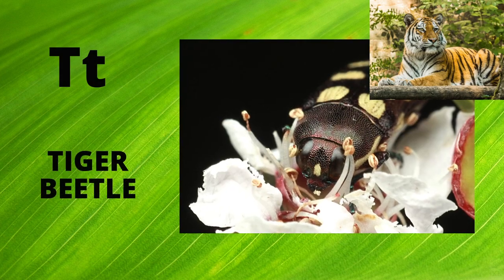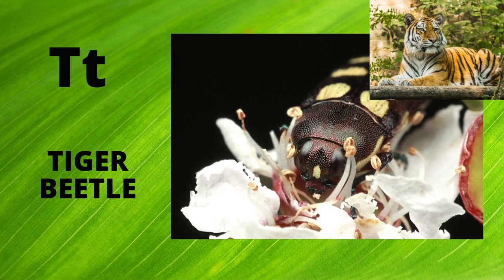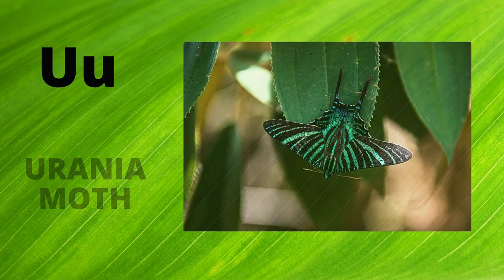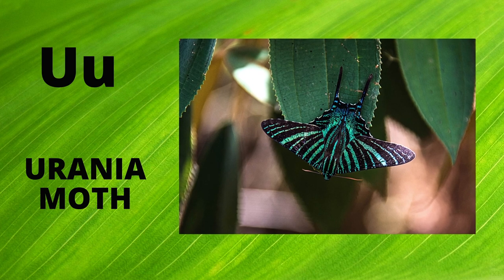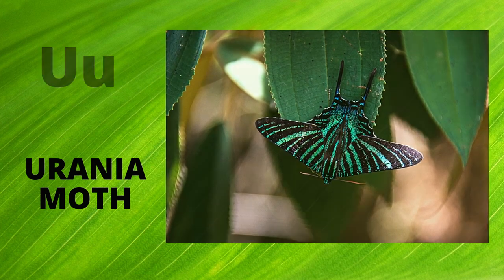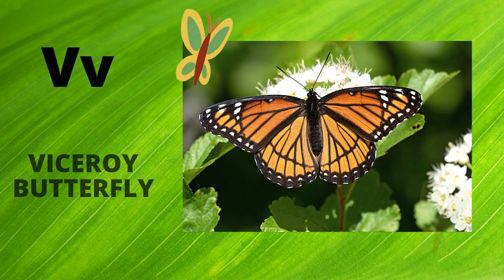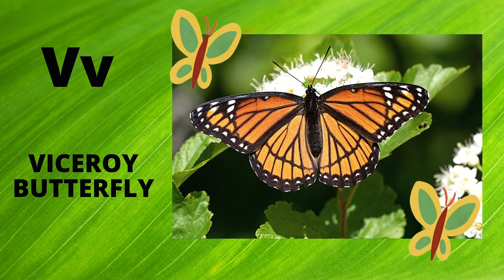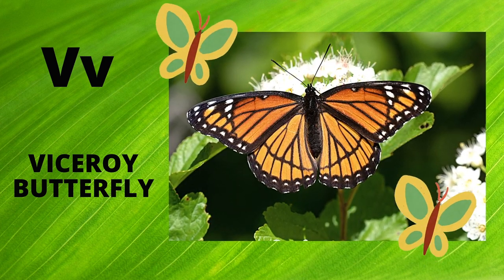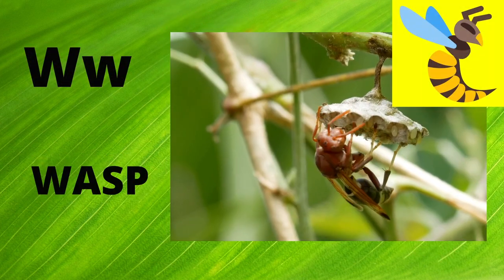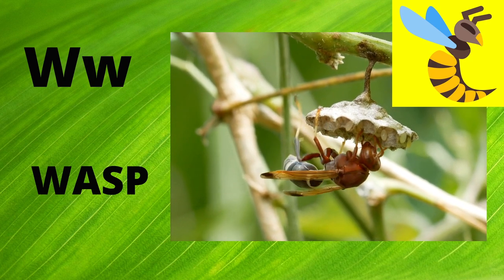T is for Tiger Beetle. T. Tiger Beetle. U is for Uranium Moth. Uranium Moth. V is for Viceroy Butterfly. V. Viceroy Butterfly.